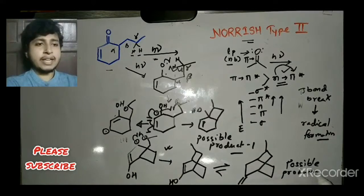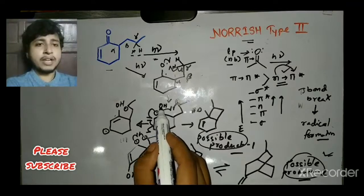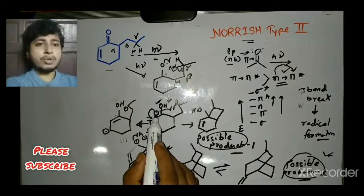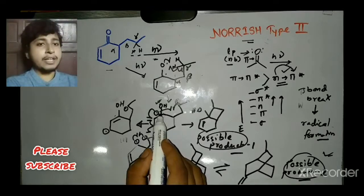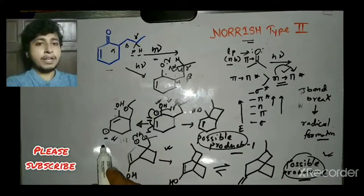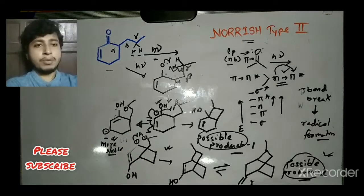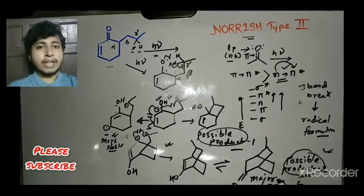There is a competition between possible product one and possible product two. In product one, the radical is on a carbon directly attached to electronegative oxygen, making it electron-deficient — an unstable situation since the radical is already electron-deficient. The beta carbon is farther from oxygen, so the beta radical in product two is more stable. Therefore, the pathway leading to product two is favored, and possible product two is the major product and correct answer.